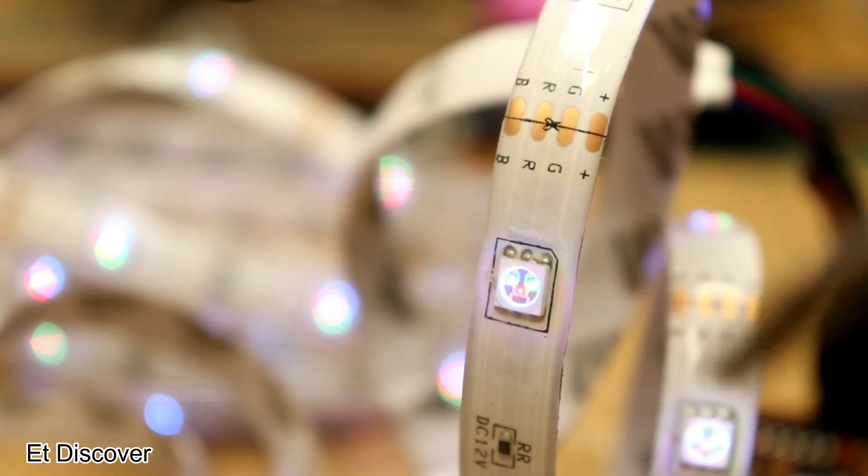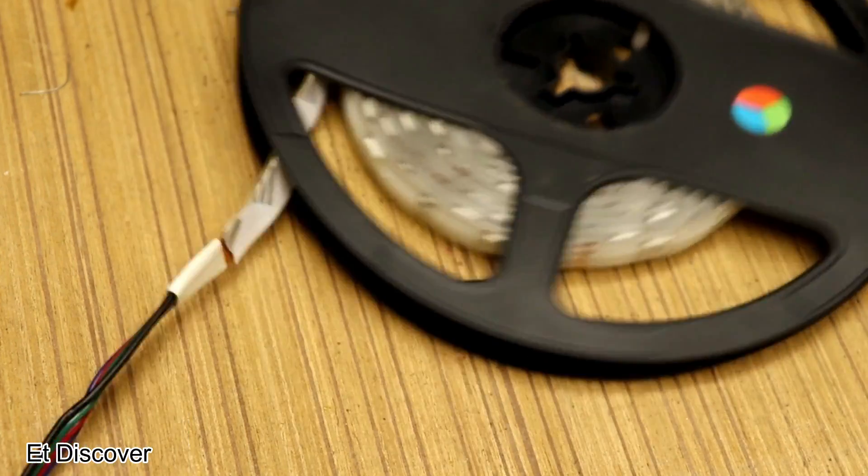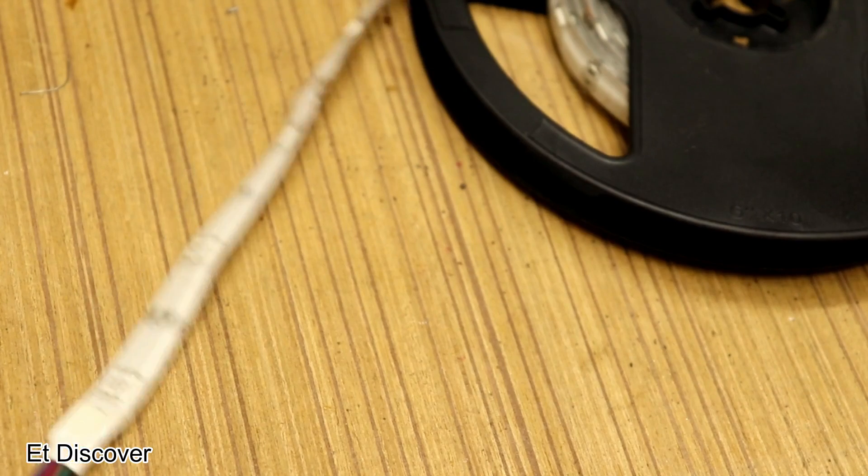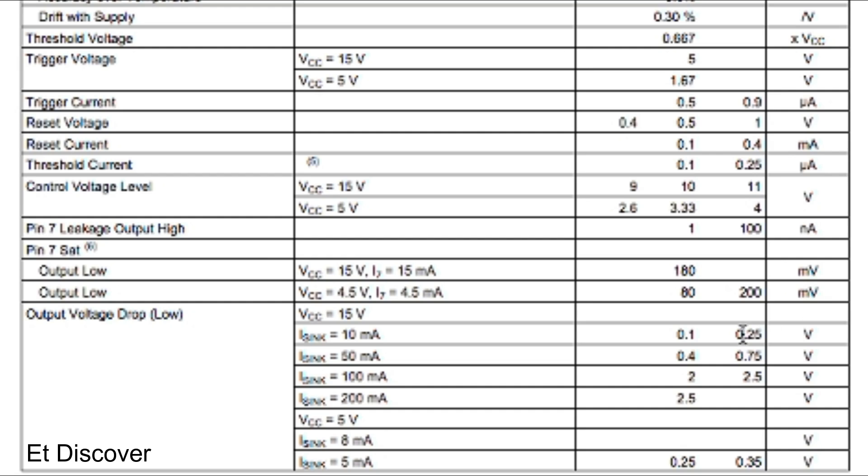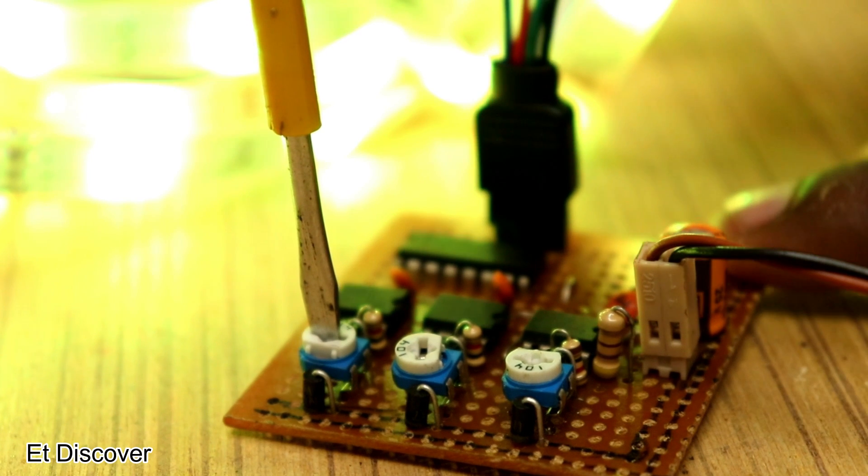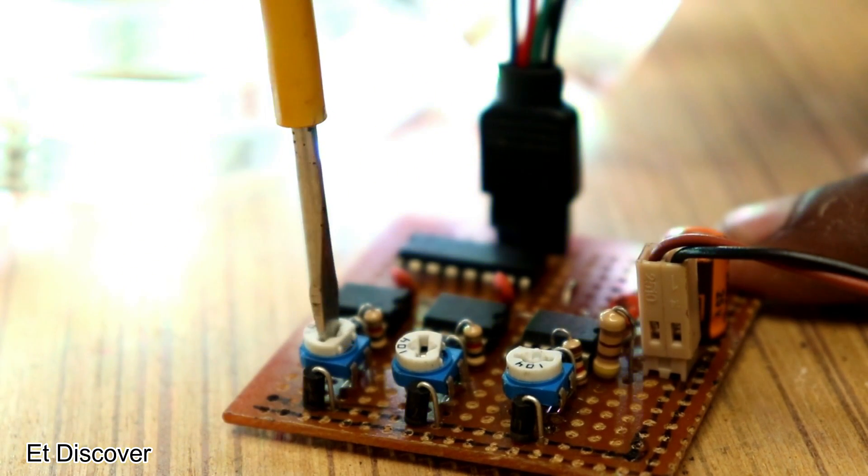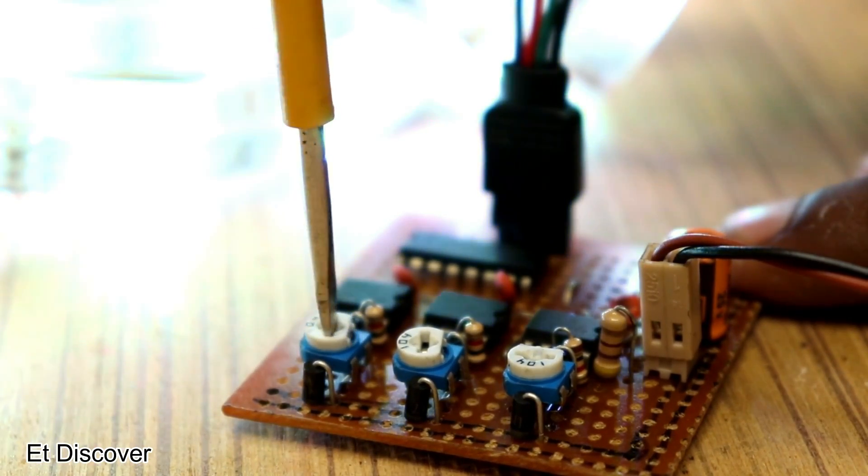Each LED can take a 20 mA load. There are 150 LEDs here, so they can take 3000 mA of load. The 555 IC can produce 200 mA maximum. So we need to increase voltage and current for this LED strip.